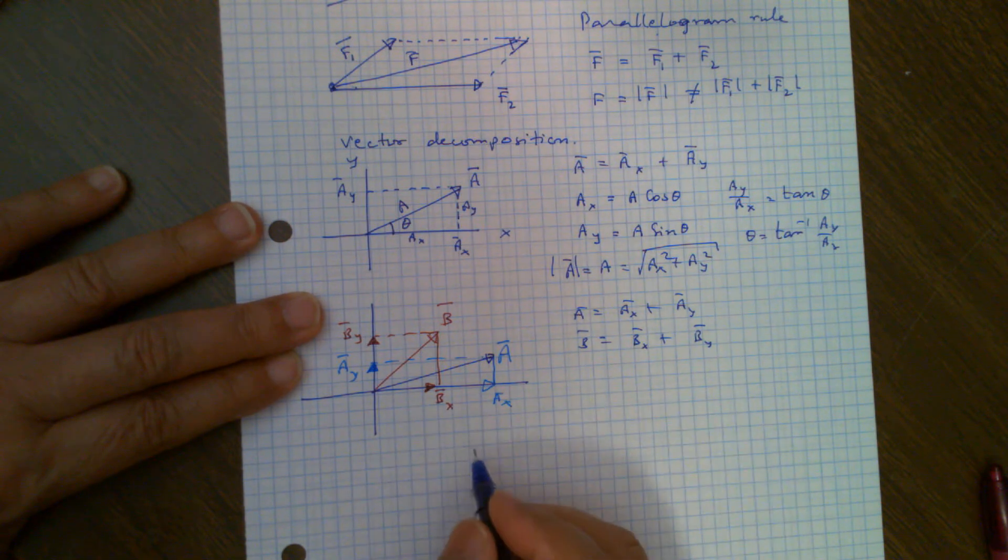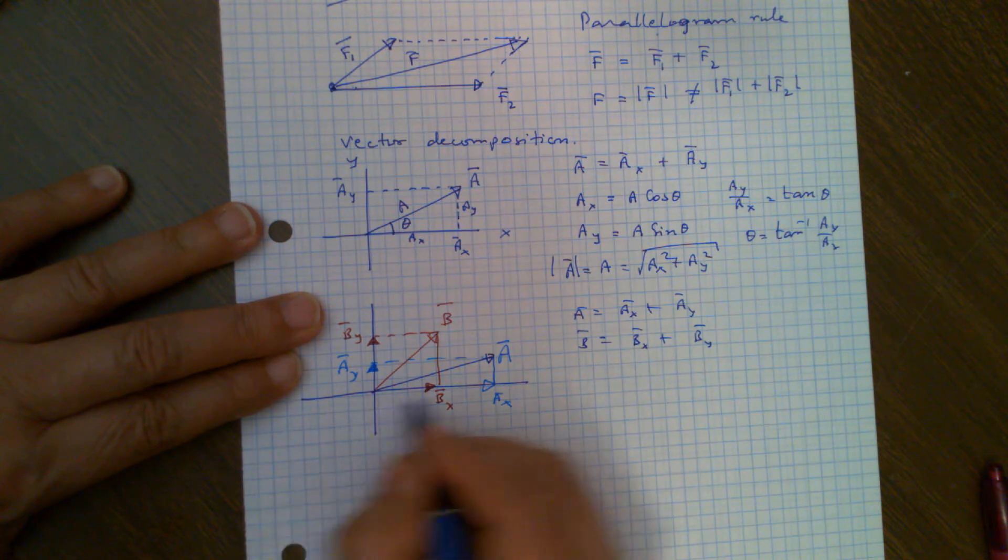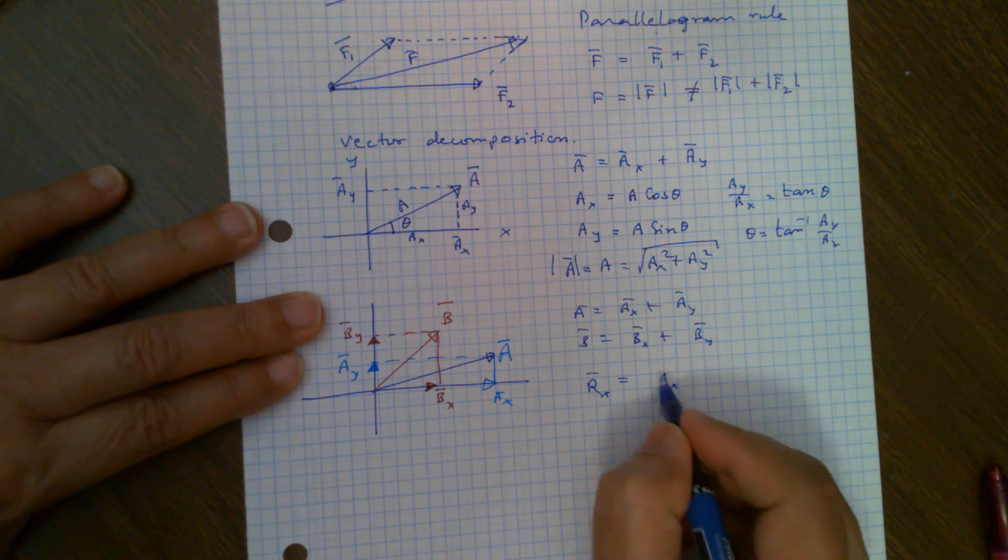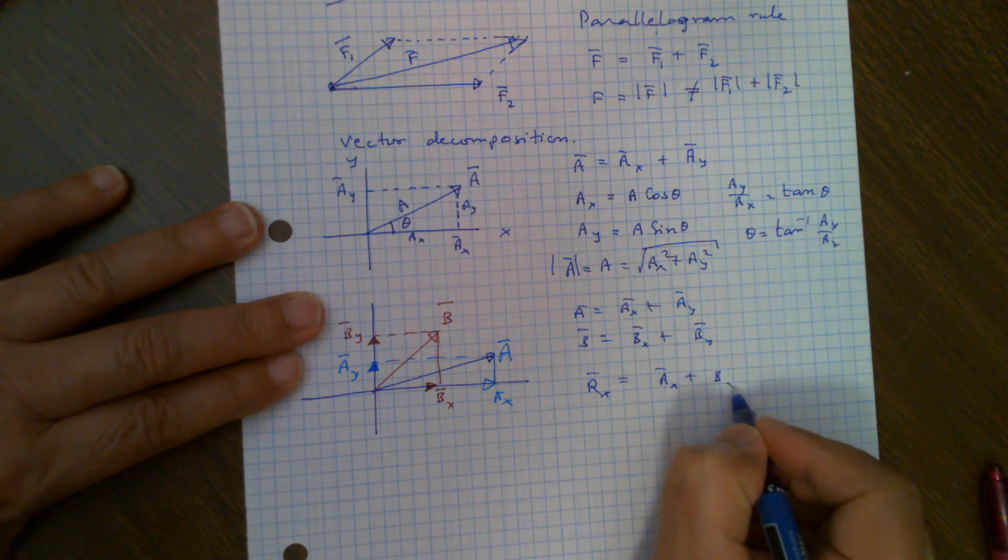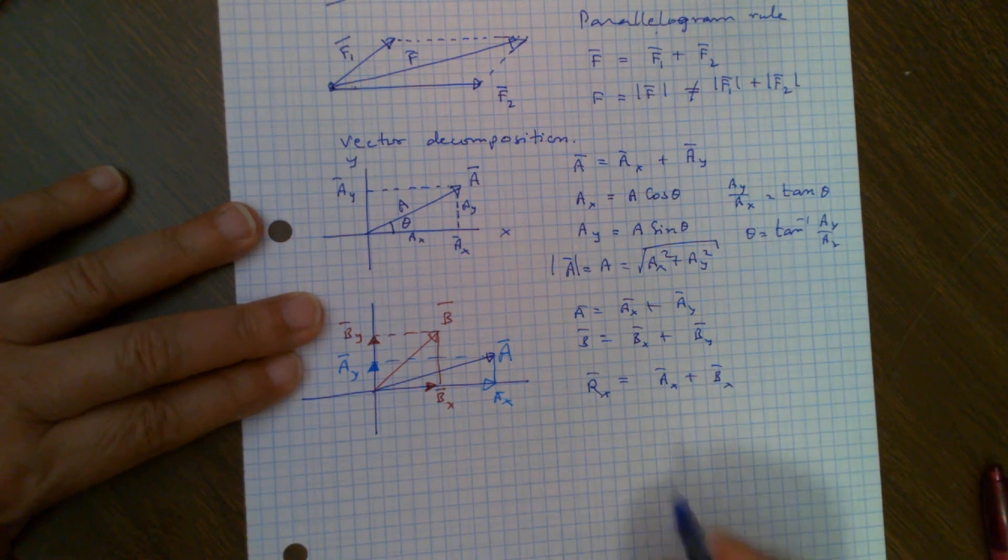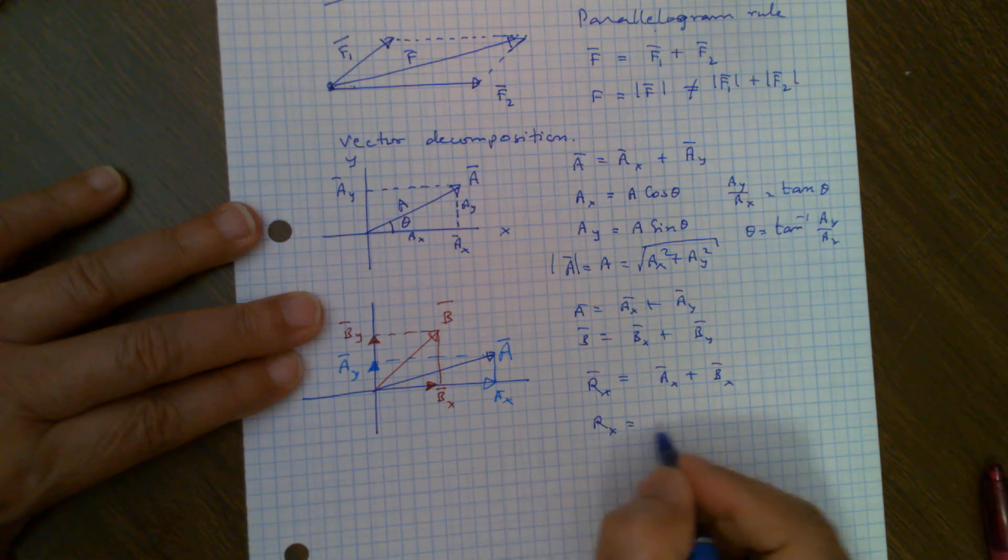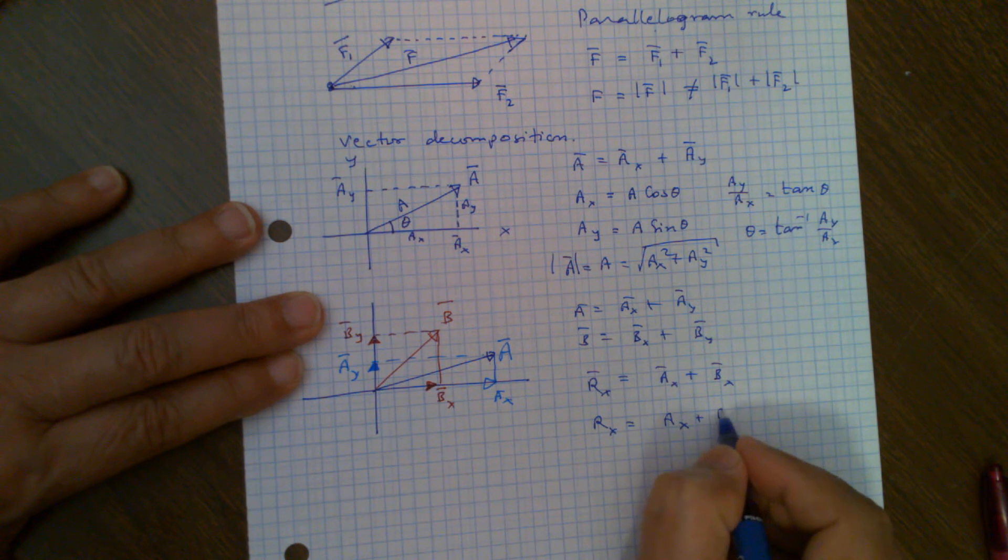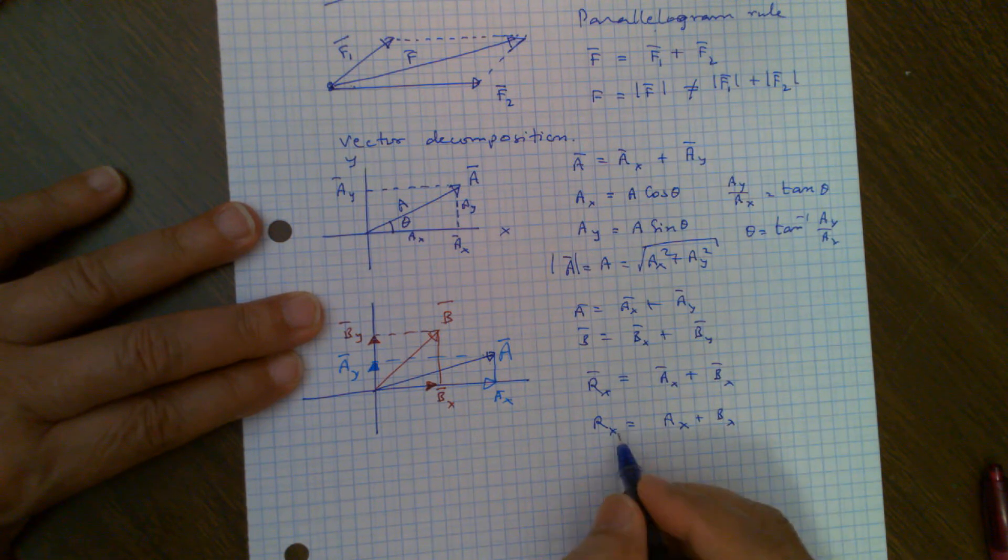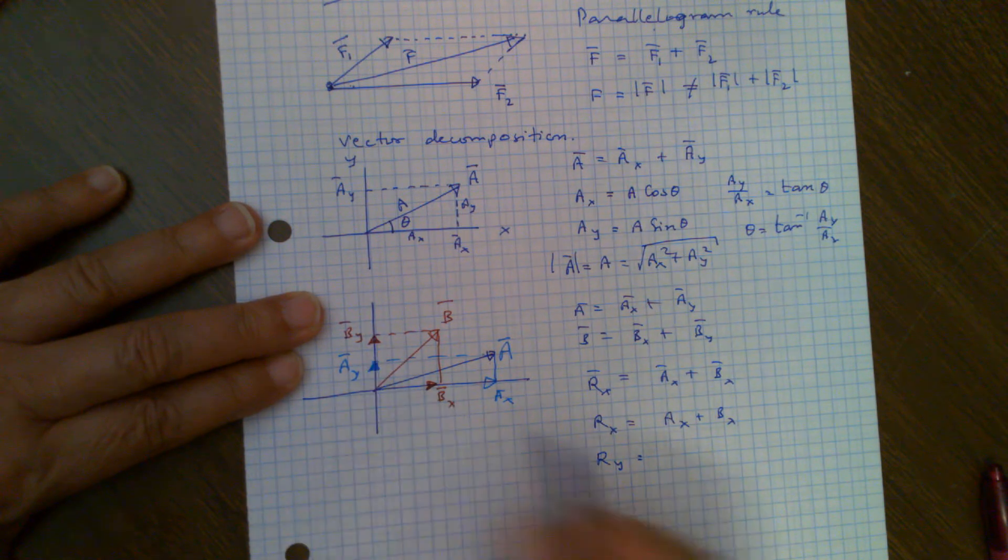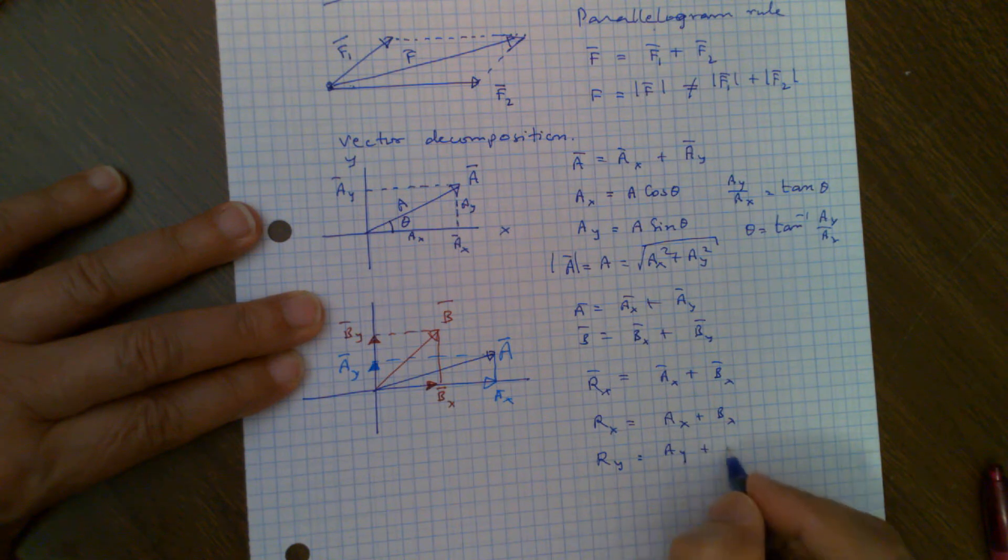So if we were to call the resultant vector R, then RX will be in the direction of AX plus BX. Because they are in the same direction, they will add up. And since there are no angles involved, it will be just RX equals AX plus BX, and the direction is in the positive X direction. Similarly, RY will be AY plus BY, magnitude of AY plus magnitude of BY, because they are in the same direction.